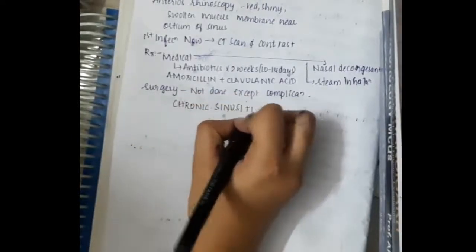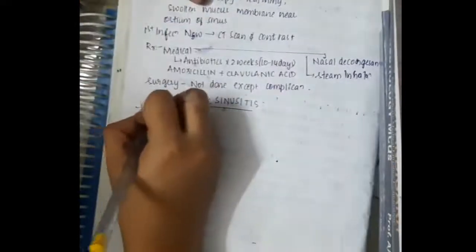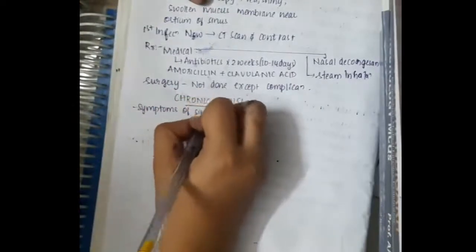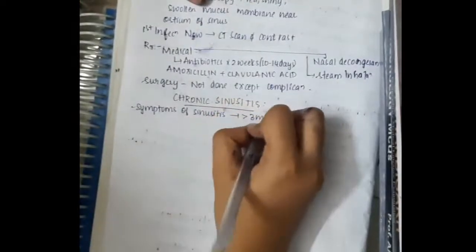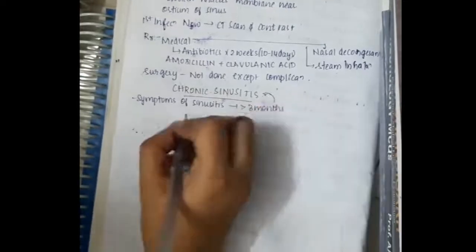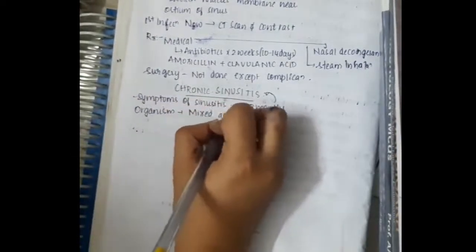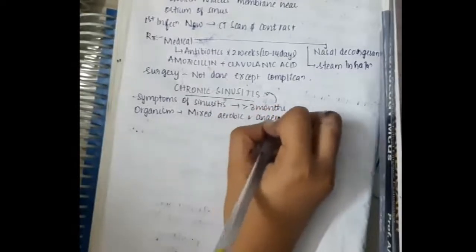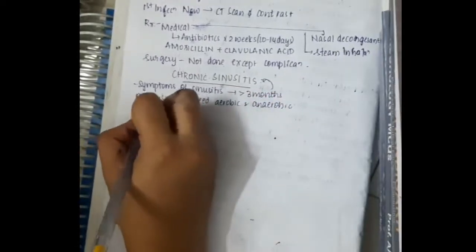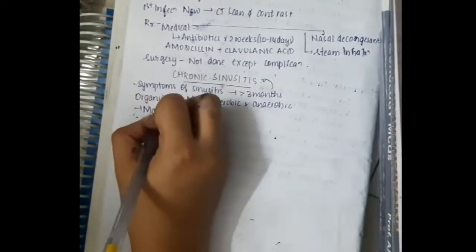Hello friends, let us now learn some important points about chronic sinusitis. The symptoms of sinusitis, if they are present for more than 3 months, then we call it as chronic sinusitis. This chronic sinusitis occurs due to mixed organisms, mixed aerobic and anaerobic organisms.